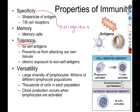Tolerance is a critical component — it means we don't attack our own cells and tissues. This isn't perfect, because autoimmune disorders exist, but they are the exception rather than the norm. Chronic exposure to non-self antigens can create tolerance to them, but more importantly, we need to be able to not attack our own cells and tissues.